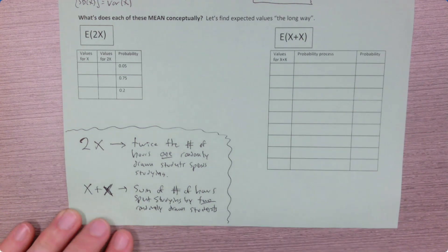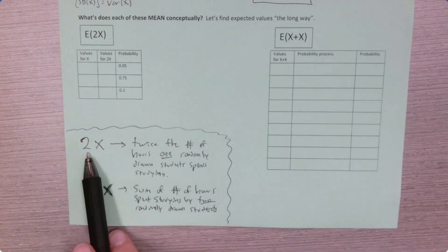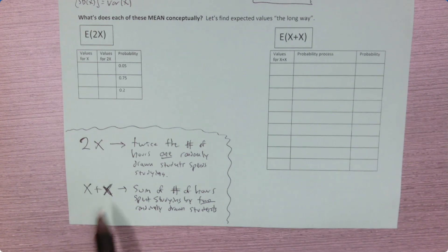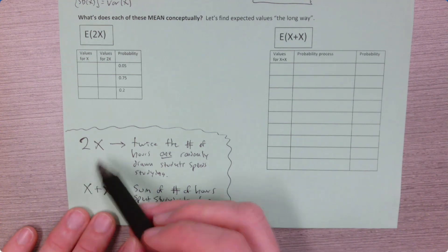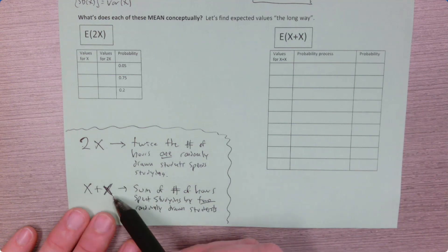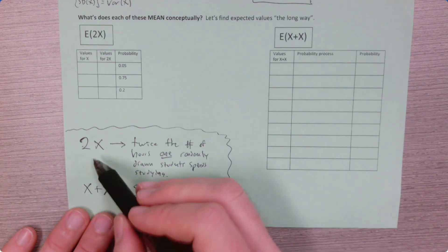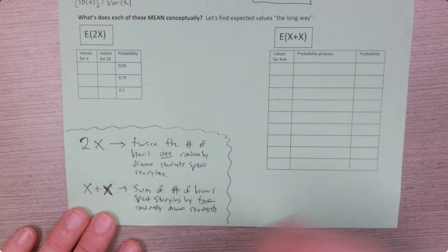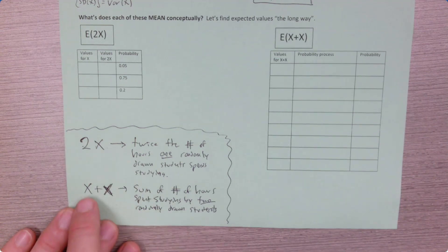It's a really important conceptual difference. Here, we're randomly drawing 1 student and doubling it. Here, we're randomly drawing 2 students and adding them. In algebra, these would always be the same — if x is 5, 2 times 5 is the same as 5 plus 5. But because x is a random variable whose value is determined by a random event, those two situations aren't necessarily going to be the same.